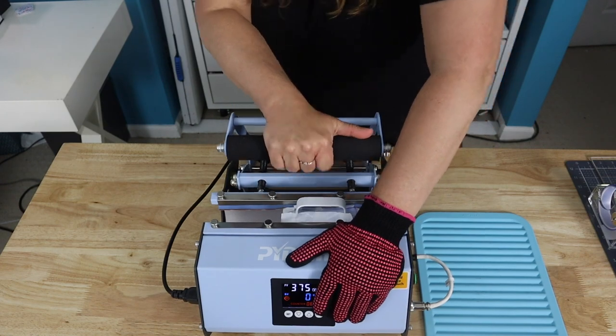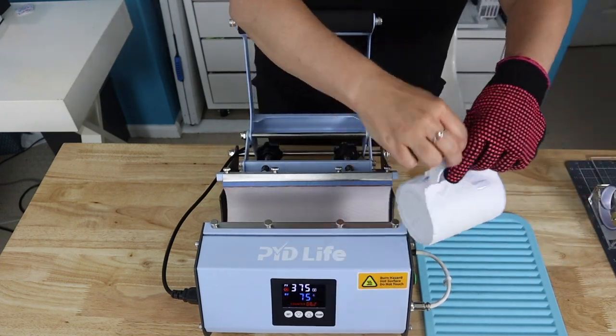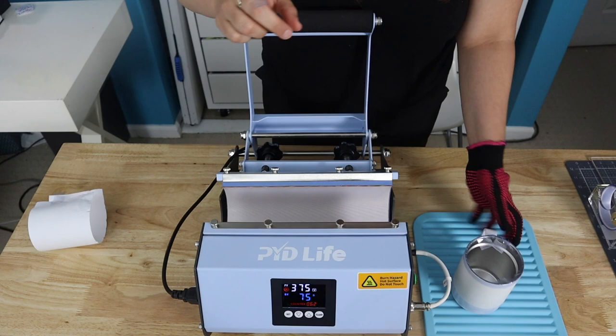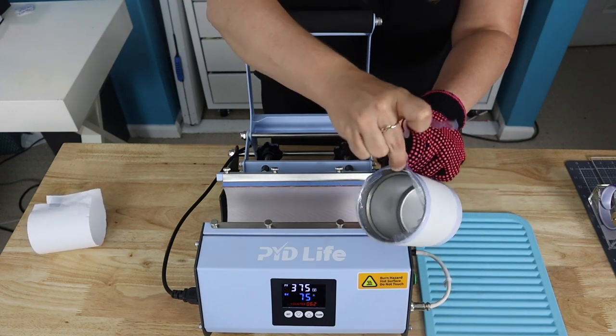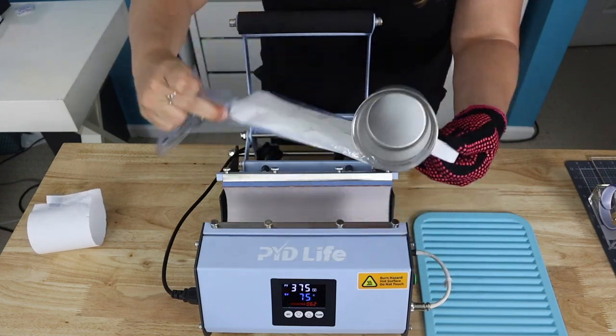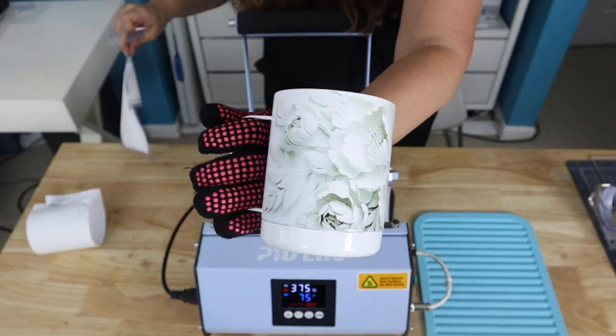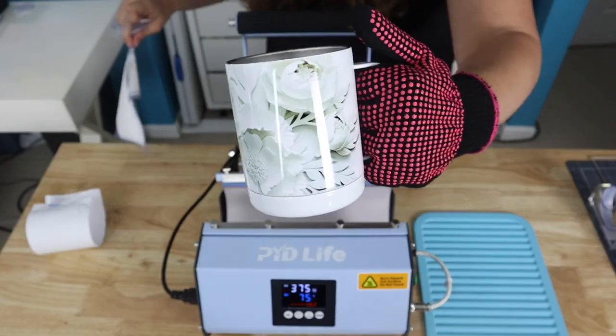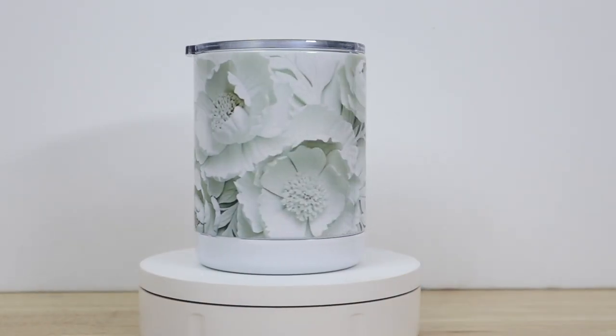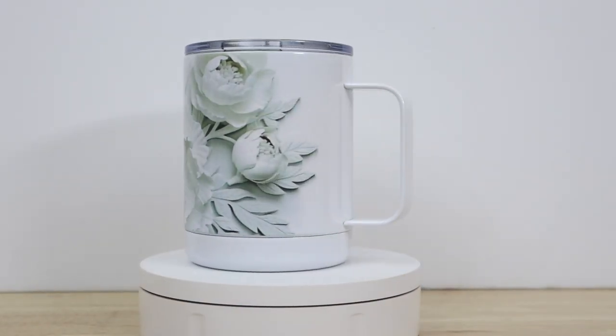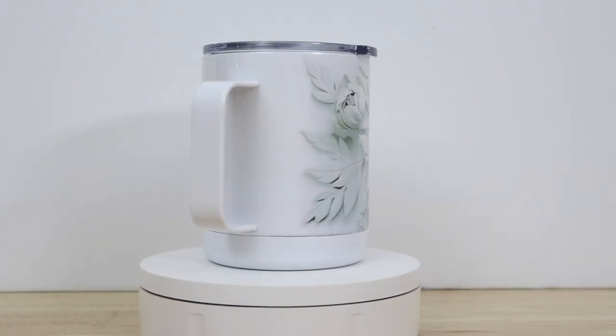So once we pull it out, we like a hot peel. So that's where these tabs come in very handy. We are just going to grab those tabs and look at how great that paper came off as well as how beautiful this design is. Now we're going to give you some close up beauty shots here. Wow, pretty.